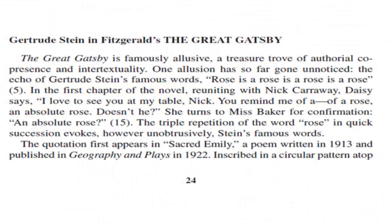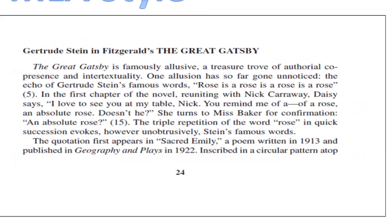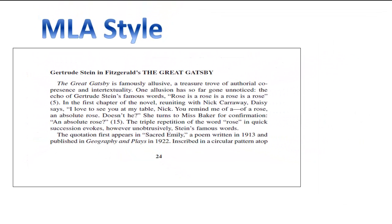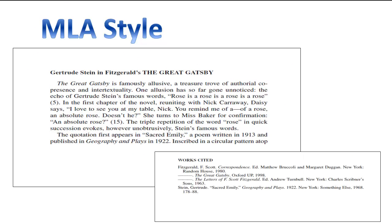If the sentence does not include the author's name, you would put the author's last name in parentheses with the page number. A reader can then look to the works cited to find all of the information about the novel and the book that the Gertrude Stein quote was taken from.